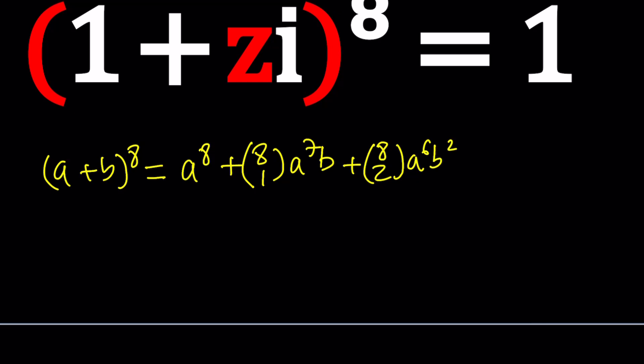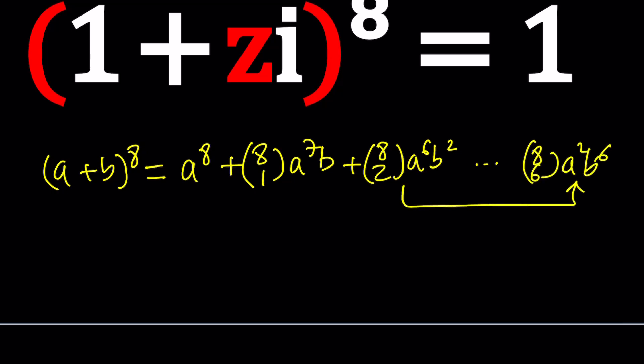Notice the symmetry: when you move further along, you get terms like 8-choose-6 times A^2 times B^6. The coefficients 8-choose-2 and 8-choose-6 are the same numbers due to Pascal's triangle symmetry. But this expansion is way too long. And how do you solve an octic equation? There's not even a haptic, hexic, or quintic formula — we had to stop at the quartic, which is really sad.